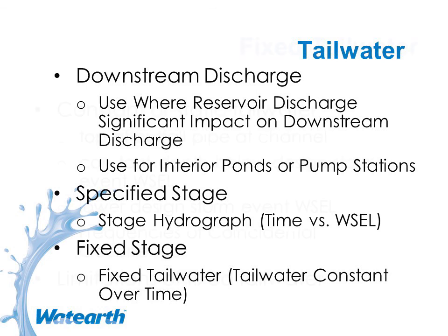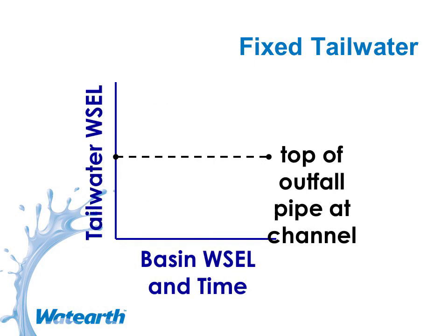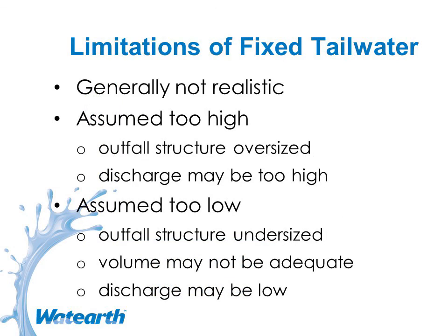If you're using fixed tailwater, there are some limitations. Common places to set it are the top of the outfall pipe or a constant depth below the design water surface. You might be routing for a 100-year event and set the tailwater at the 10-year event — this is a frequencies-of-coincidental-occurrence methodology. But it's basically constant over time, which is not generally realistic. The drawback: if you assume it's too high, your outfall structure may be unusually large and discharge may exceed allowable in real life; if too low, you might undersize the outfall structure and the volume may not be adequate.